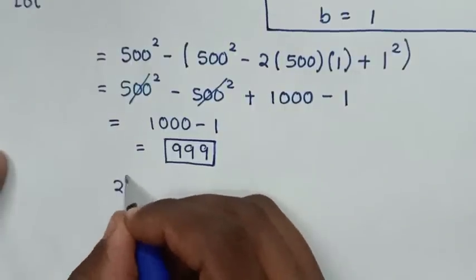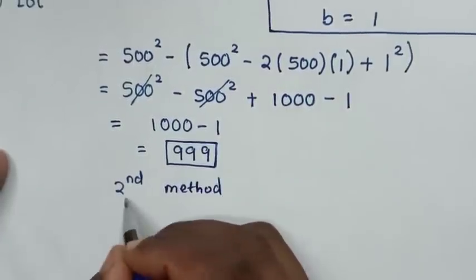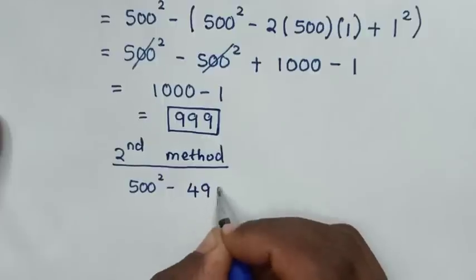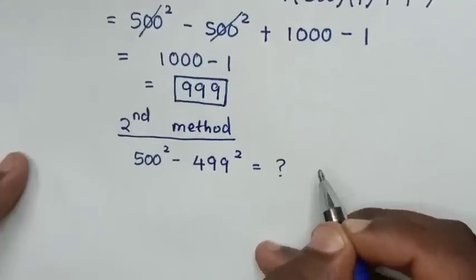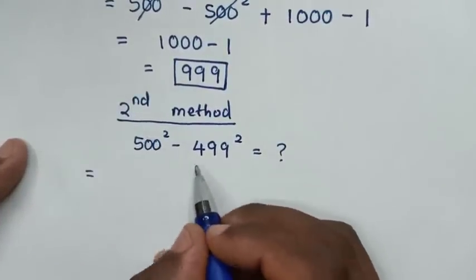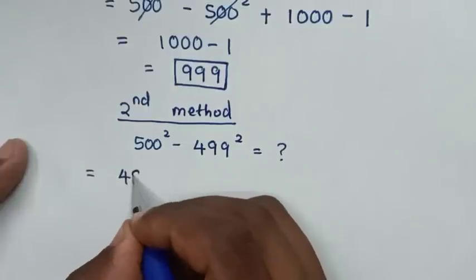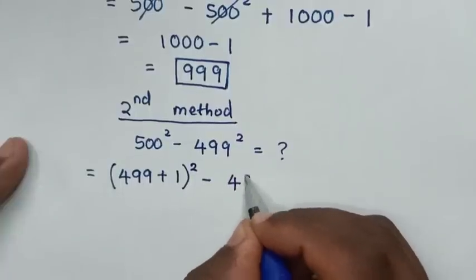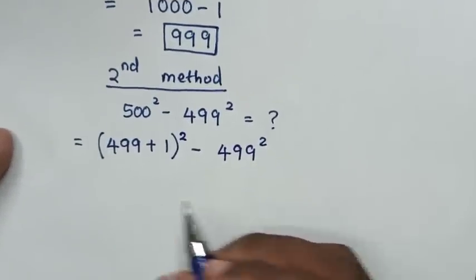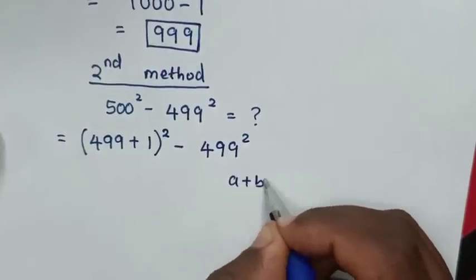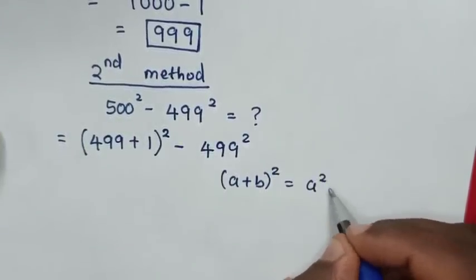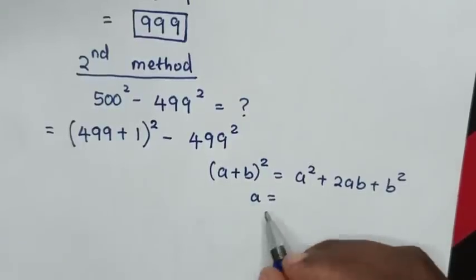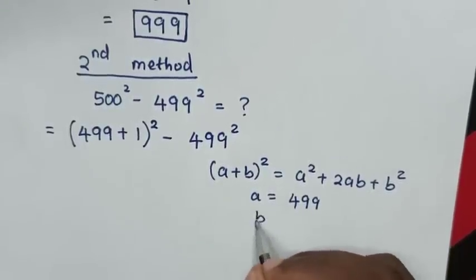Now, to try another second method. From our problem, which is 500 square minus 499 square. From this expression, it will be equal to — for this 500 to have common 499, this is the same as 499 plus 1, bracket square, then minus this 499 square. This part is in the form of A plus B bracket square, which is equal to A square plus 2AB plus B square, where A is equal to 499 and B is equal to 1.